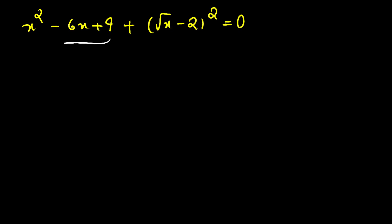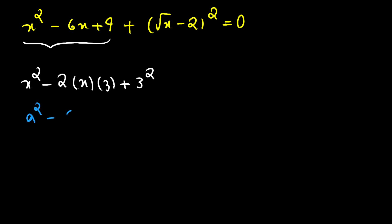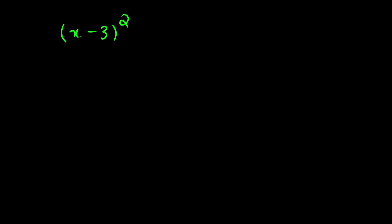Now let's look at the remaining three terms: x squared minus 6x plus 9. We can rewrite these as x squared minus 2 times x times 3 plus 3 squared, which is in the form a squared minus 2ab plus b squared — a perfect square. So this expression equals the quantity x minus 3 all squared. Our equation is therefore the quantity x minus 3 all squared plus the quantity square root of x minus 2 all squared equals 0.